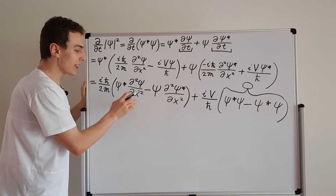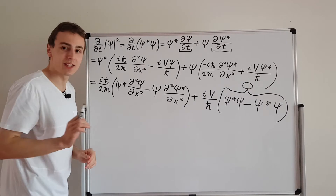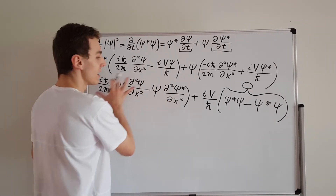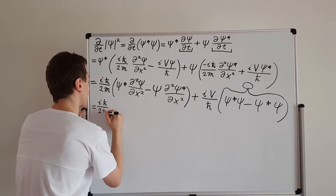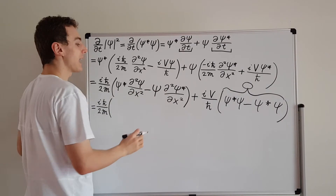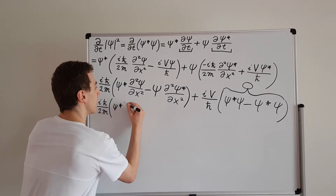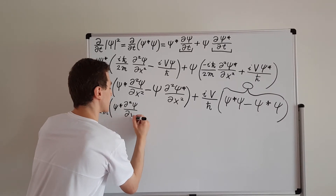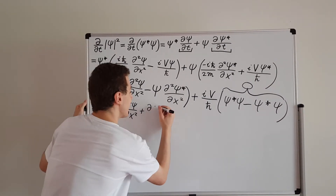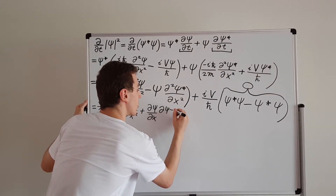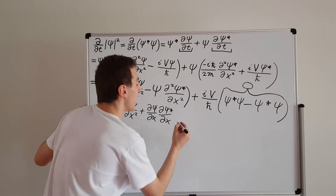What remains is the expression with i·h-bar over 2m. We can simplify it using a trick: add and subtract a middle term. We keep psi* times d²psi/dx², then add (d psi/dx)(d psi*/dx), then subtract that same term, and subtract psi times d²psi*/dx². Adding zero doesn't change the expression, but it sets up the product rule in reverse.